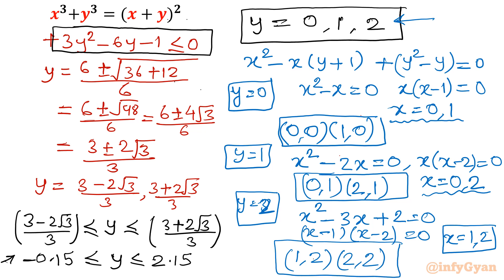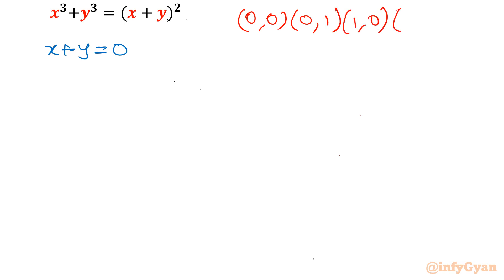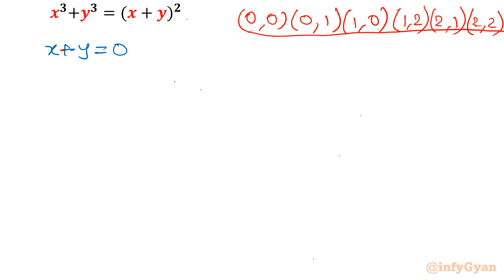So there are six ordered pair solutions from the second equation: (0,0), (0,1), (1,0), (1,2), (2,1), and (2,2). Now the first equation x plus y equals 0 is still pending.